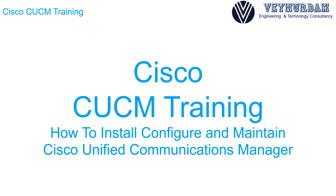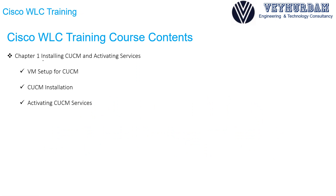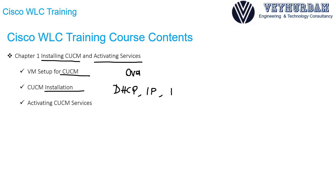Under Chapter 1, we will talk about how to install CUCM. We will first start with the VMware setup for our CUCM, how we can deploy the OVA file, and how we can do the necessary configurations and edit the settings for the OVA template for our virtual machine. Then we will start the CUCM installation, dealing with DHCP settings, IP settings, NTP, username and password settings, and other settings crucial for CUCM installation.